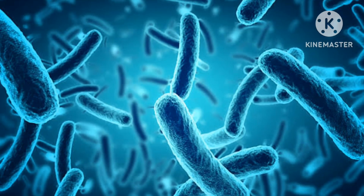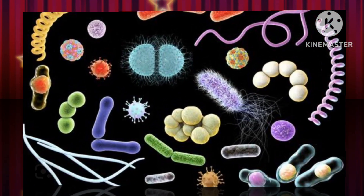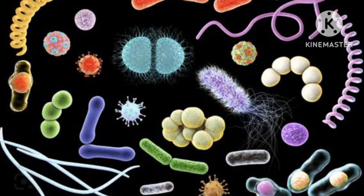In our surroundings, a wide variety of living organisms are observed — amongst us and also inside us. Some are large, while some are small enough to be seen only under a powerful microscope. These tiny organisms include millions of single-celled organisms which can be seen only with a powerful microscope. These are called microorganisms or microbes.